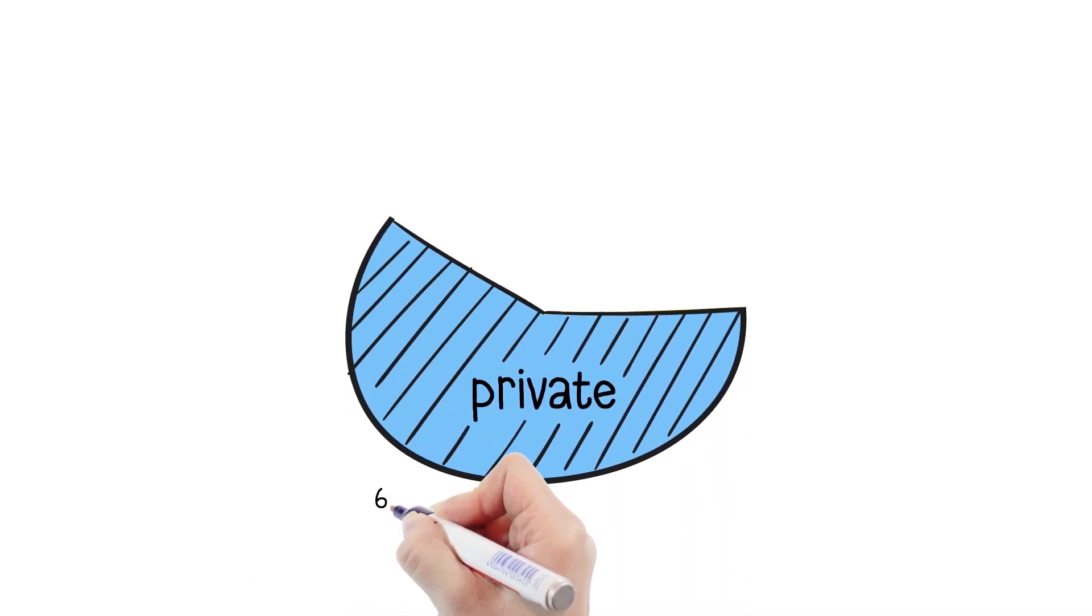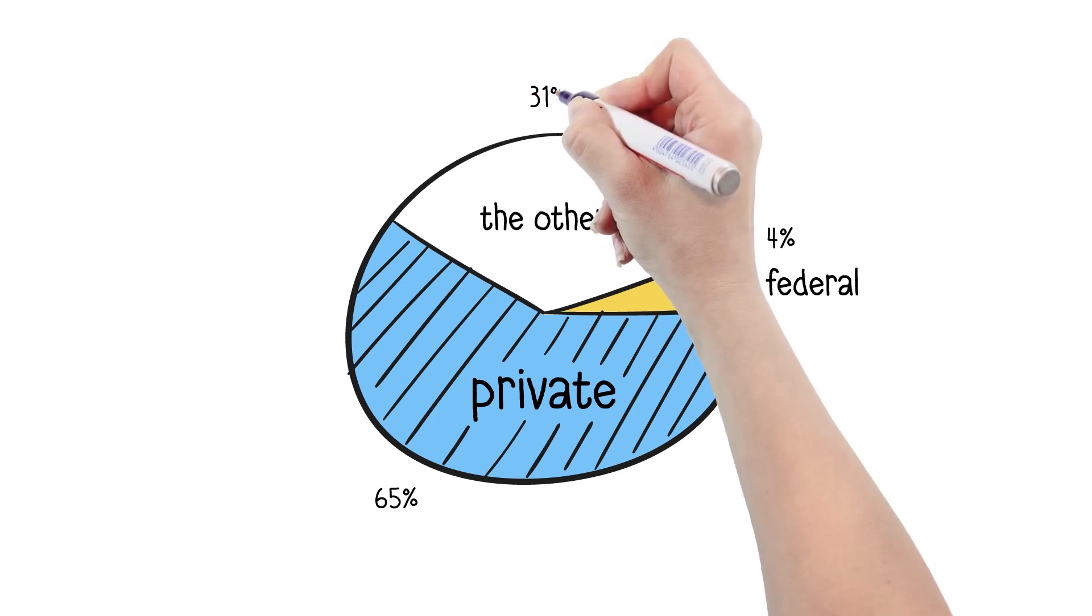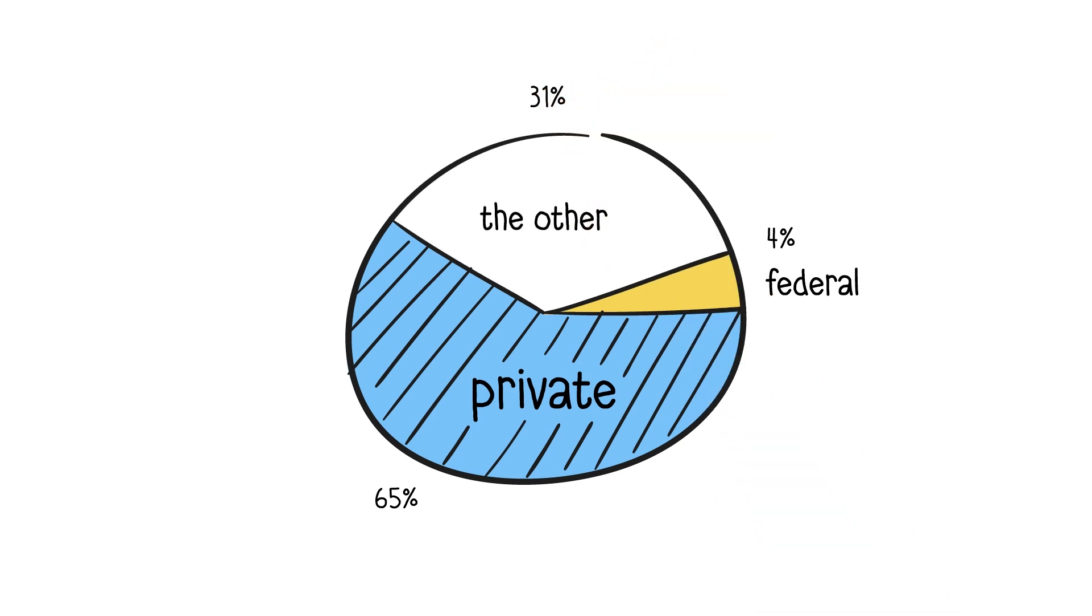65% of dams are privately owned, while the federal government owns 4%. The rest are owned by states, localities, public utilities, and tribes.